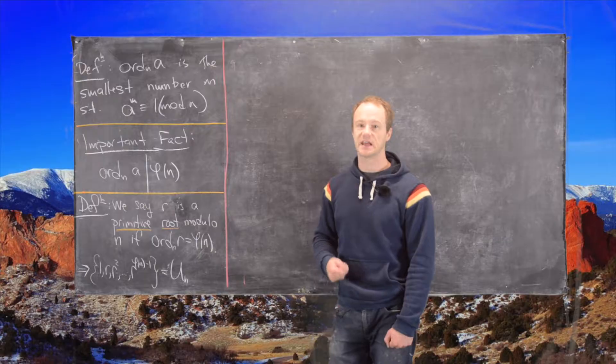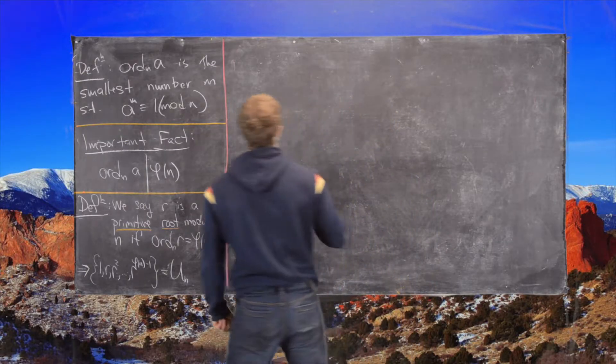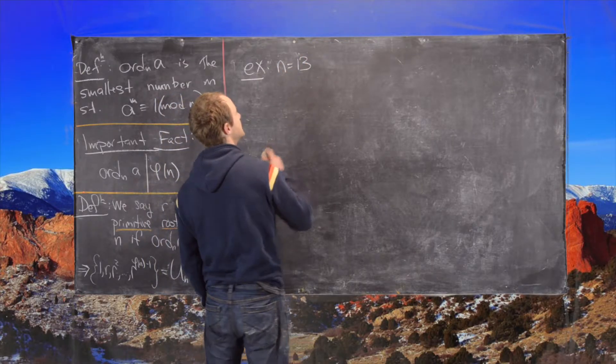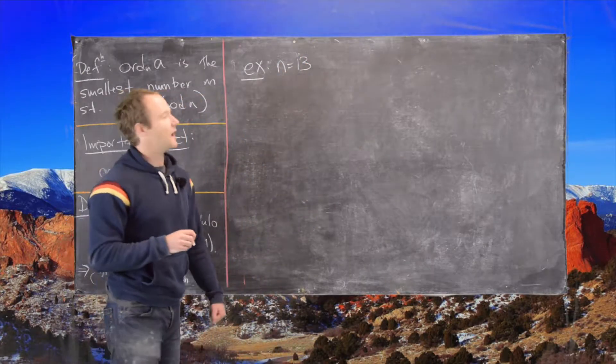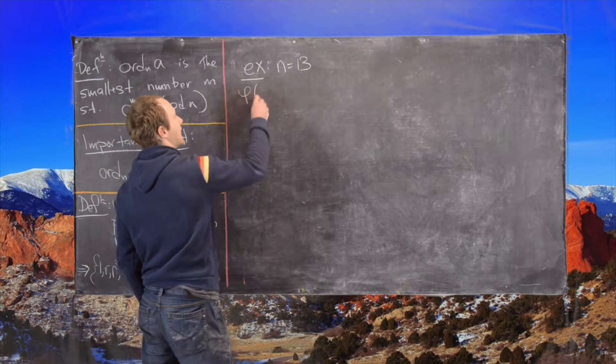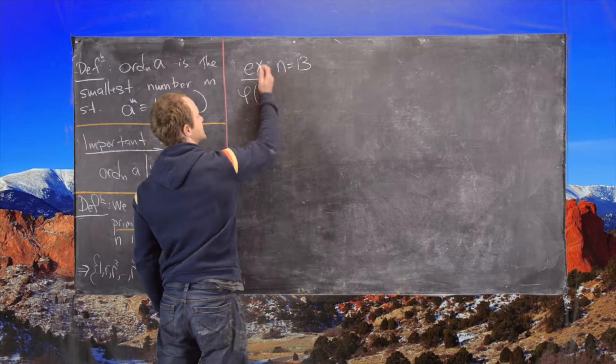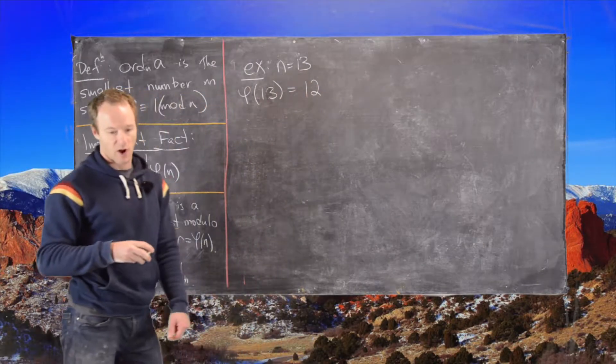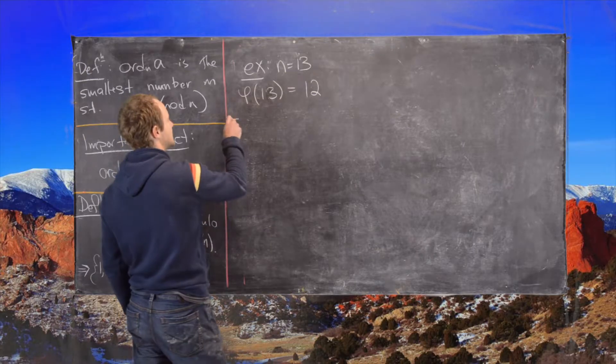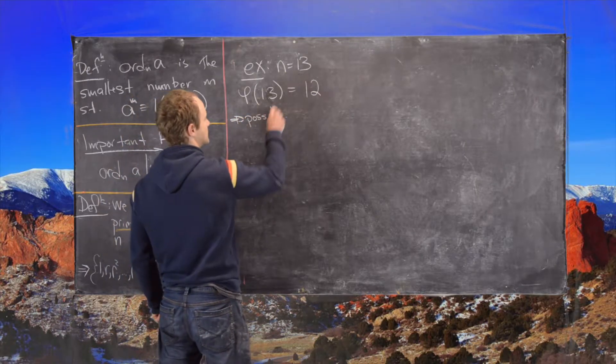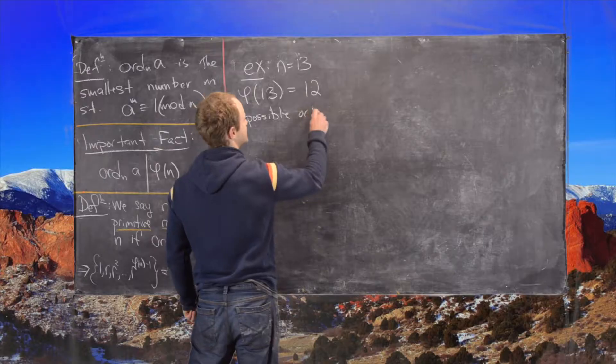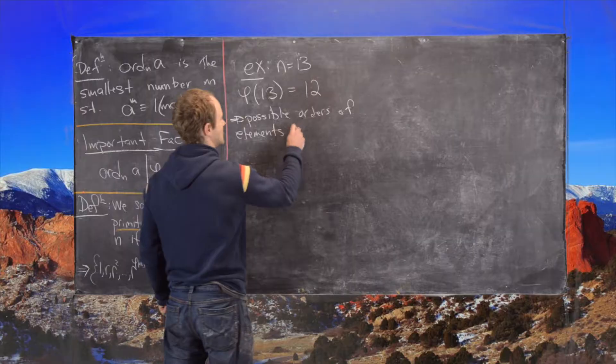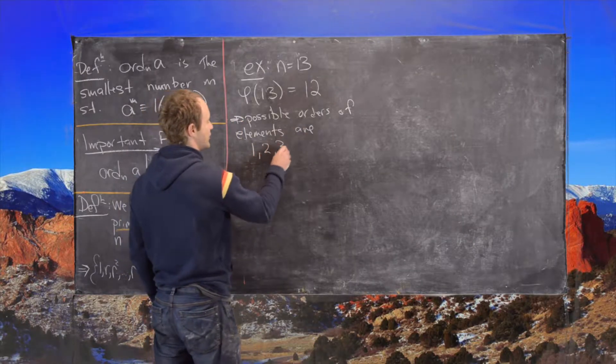So let's look at some examples of finding primitive roots. So let's first look at n equals 13. So we want to first look at phi of 13 which equals 13 minus 1 which is 12 because 13 is prime.